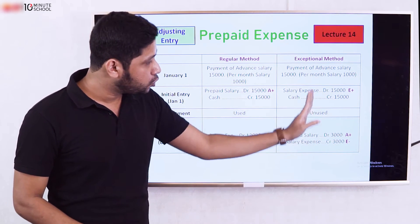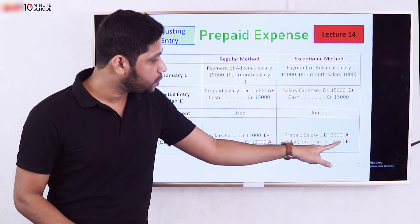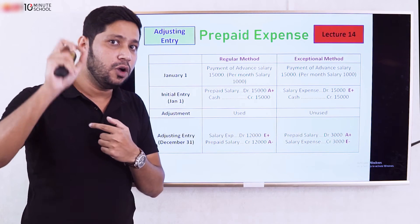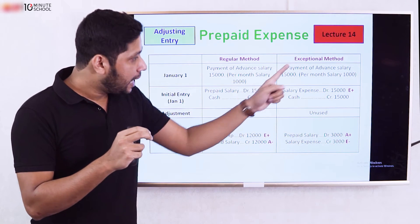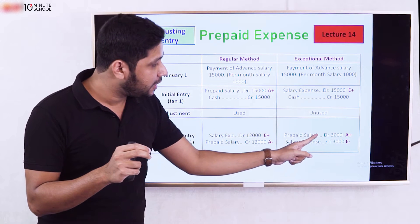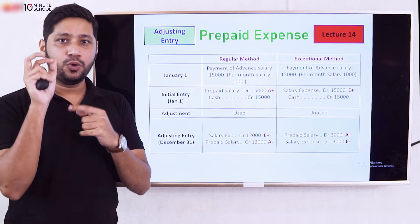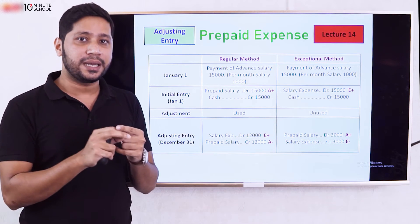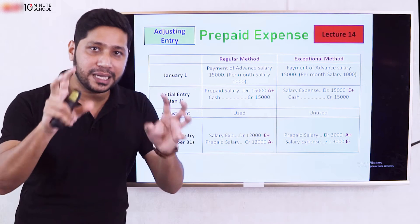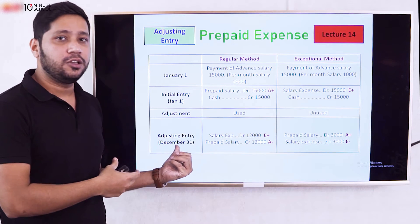Looking at the total value of the salary expense account — debit and credit — totaling $30,000. If the prepaid salary balance is $3,000 at the end, then the salary expense of $12,000 is correctly reflected in the adjusted entries.